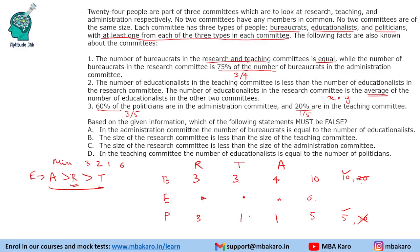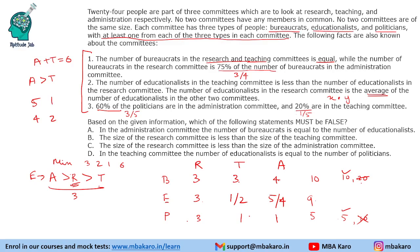We are left with 9 people for educationalists. Since research is the average of the three, the average of 9 is 3, so research has 3 educationalists. The remaining two values add to 6 with administration greater than teaching. We have two possibilities: either 5 and 1, or 4 and 2. So we cannot uniquely determine it. The totals are: research committee size 7, teaching committee size 5 or 6, and administration committee size 11 or 12.